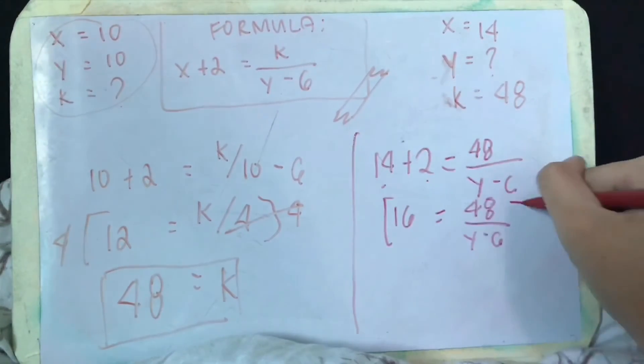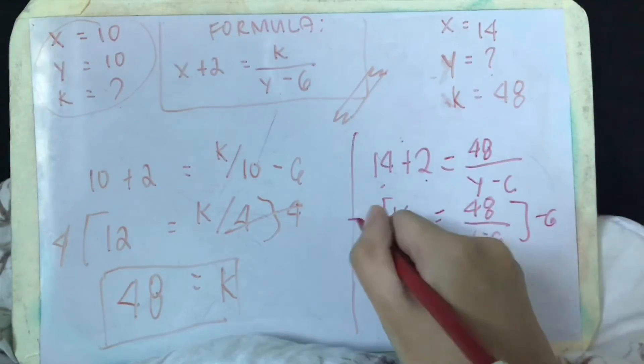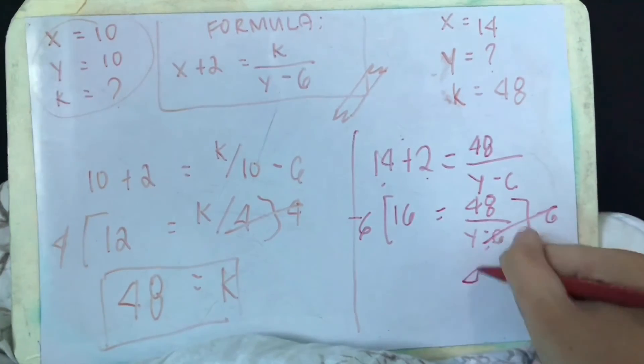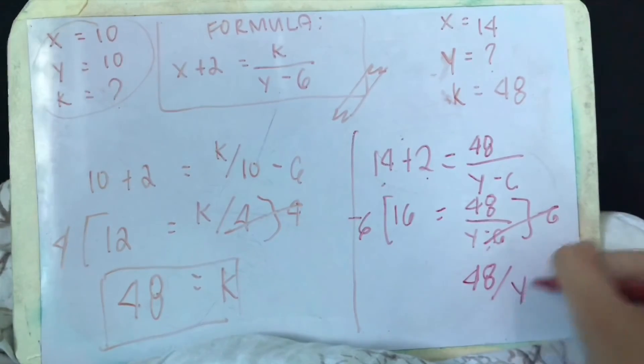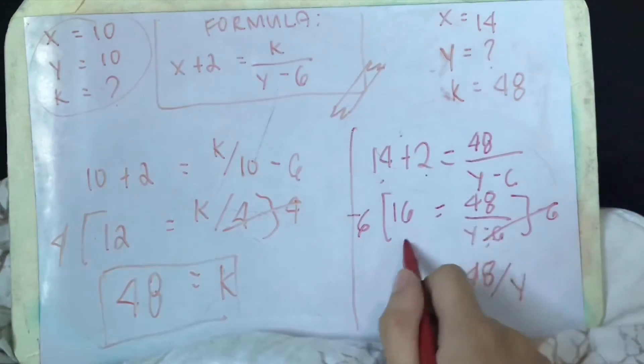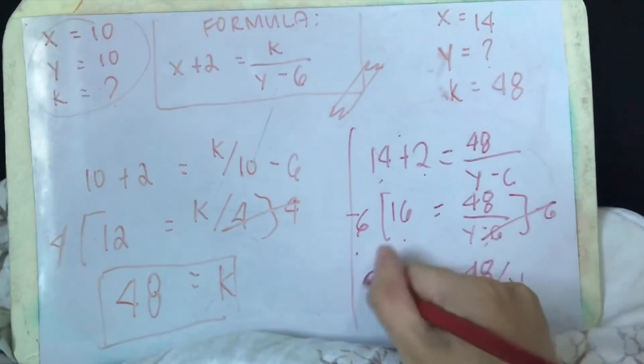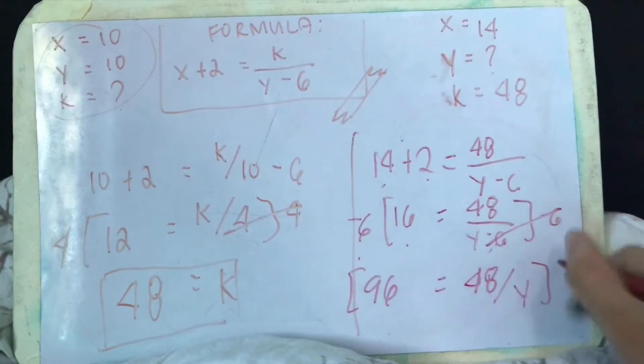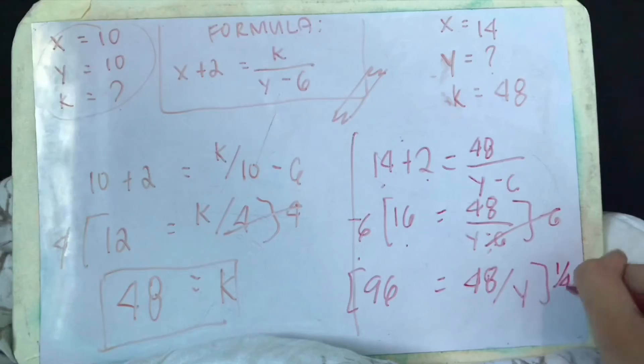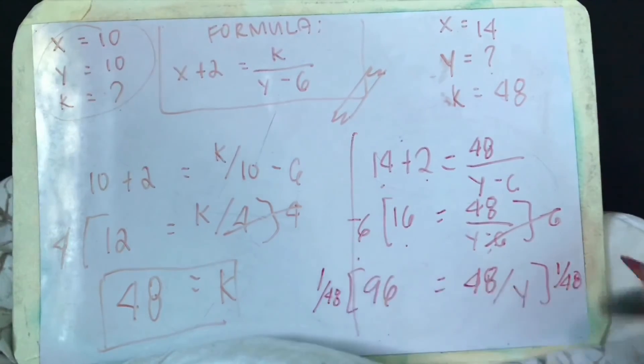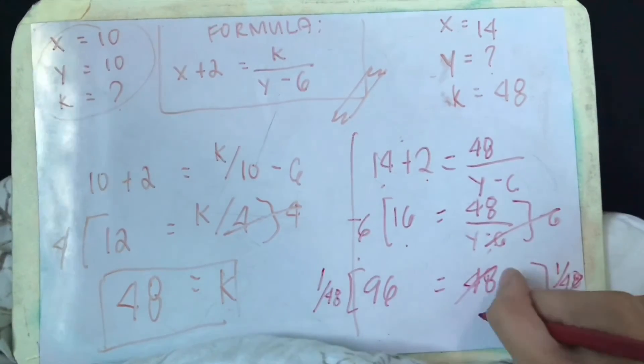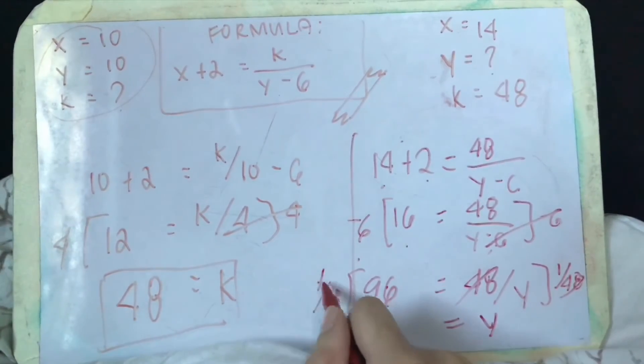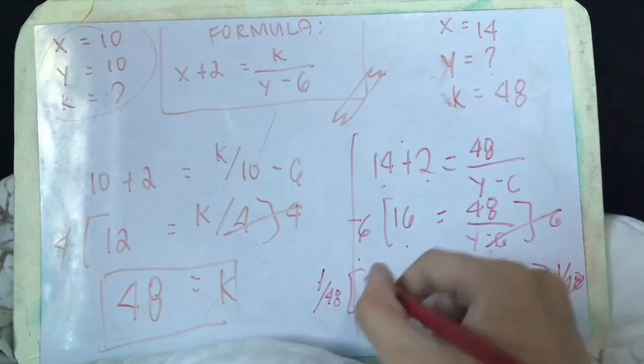Then multiply both sides by y minus 6, so the y minus 6 here will be cancelled, so 48 will be left on that side, and 16 times y minus 6 is 16y minus 96. So again multiply both sides by 1 over 48, so 48 here will be cancelled and y will be left. So 1 times 96 is 96, 96 over 48, the answer will be 2.